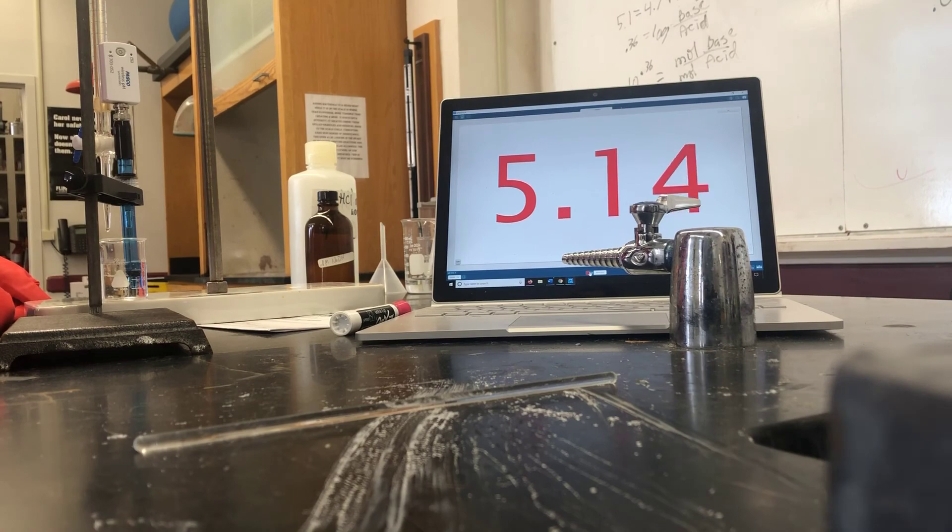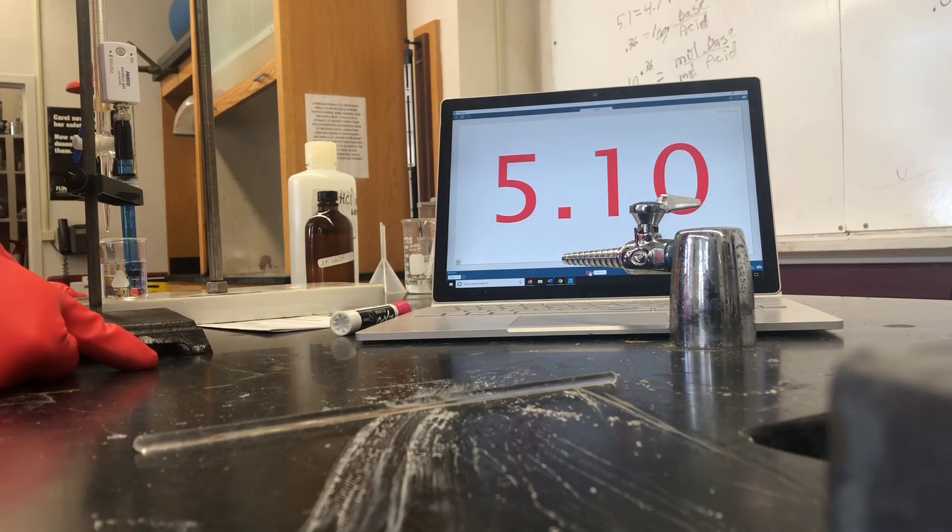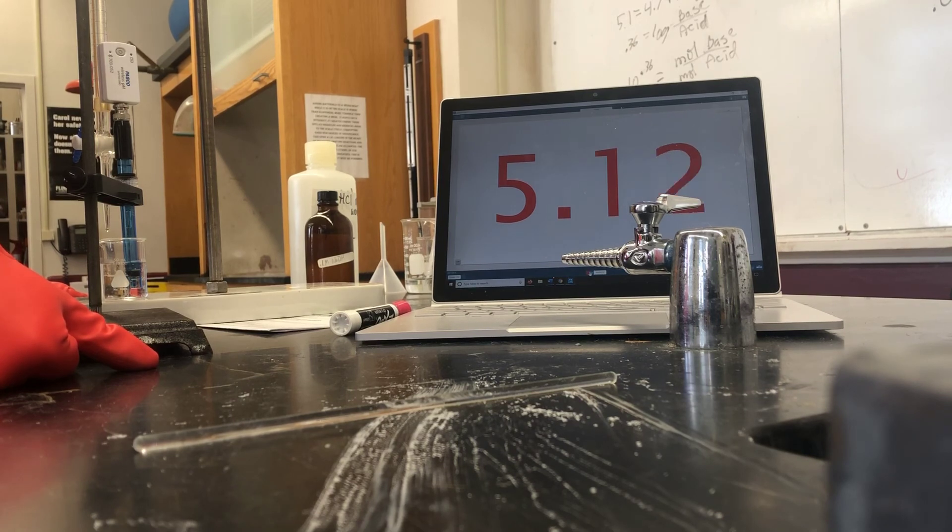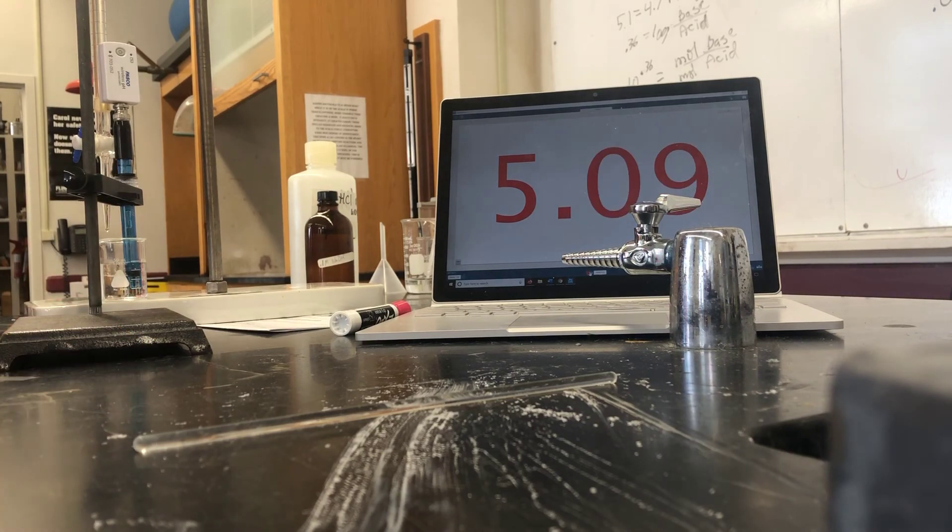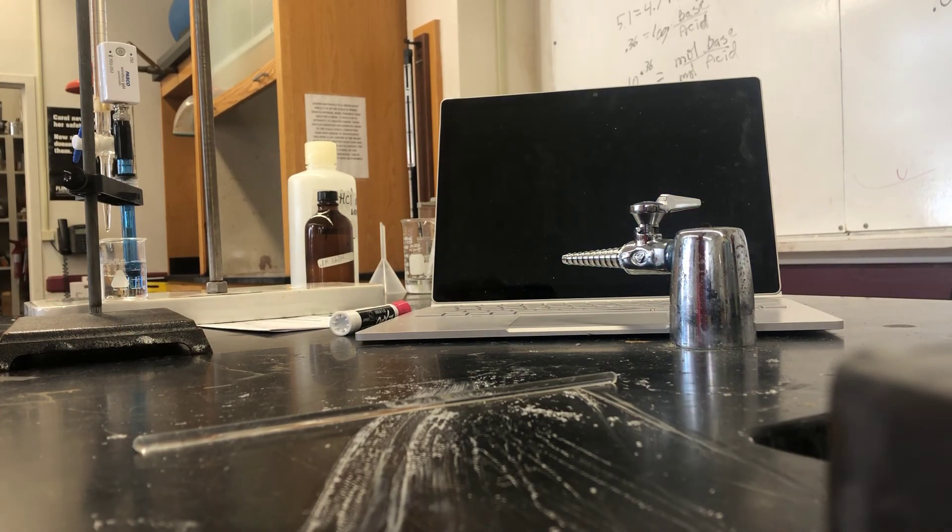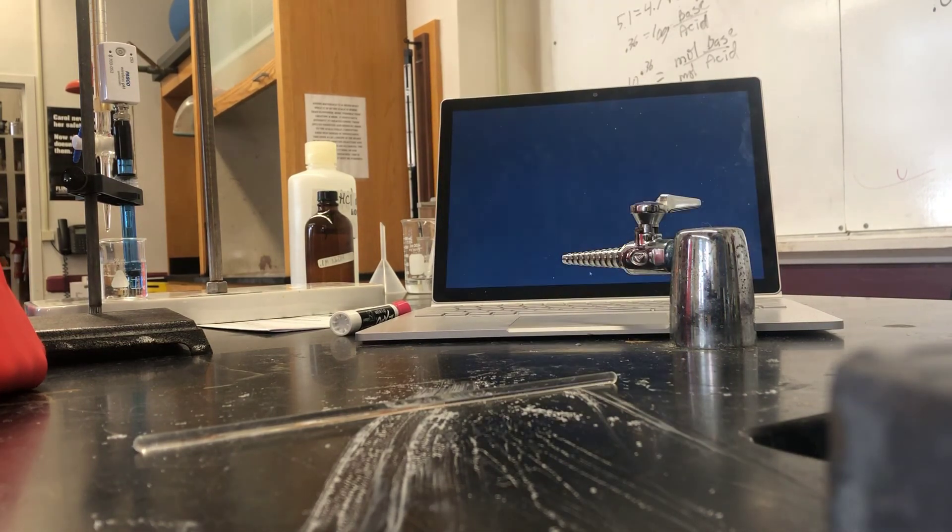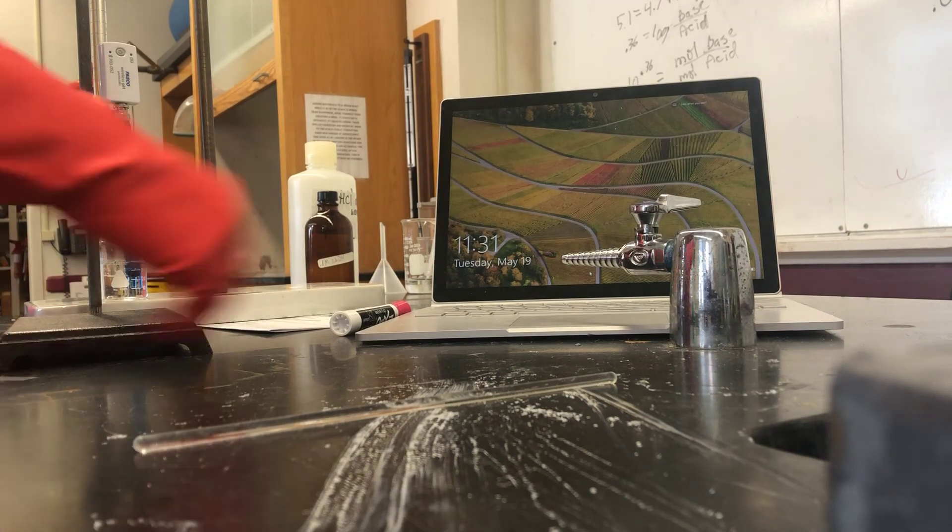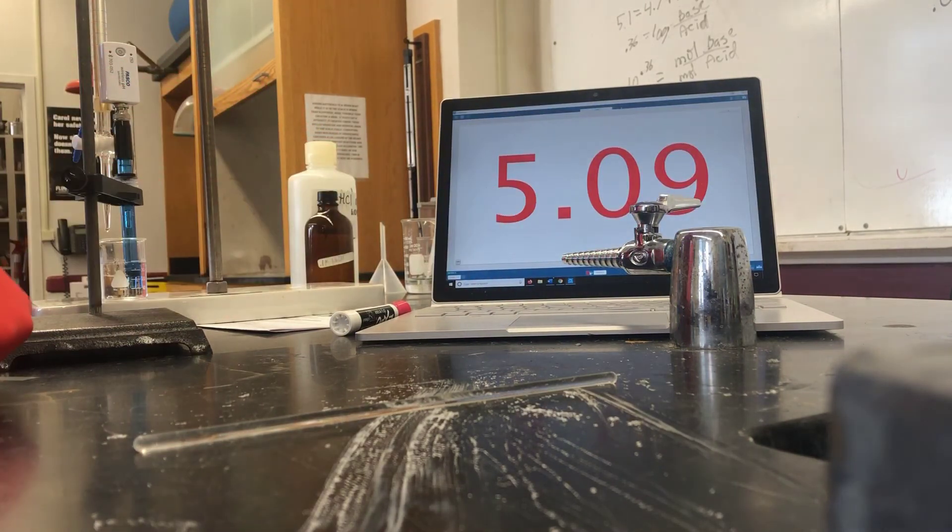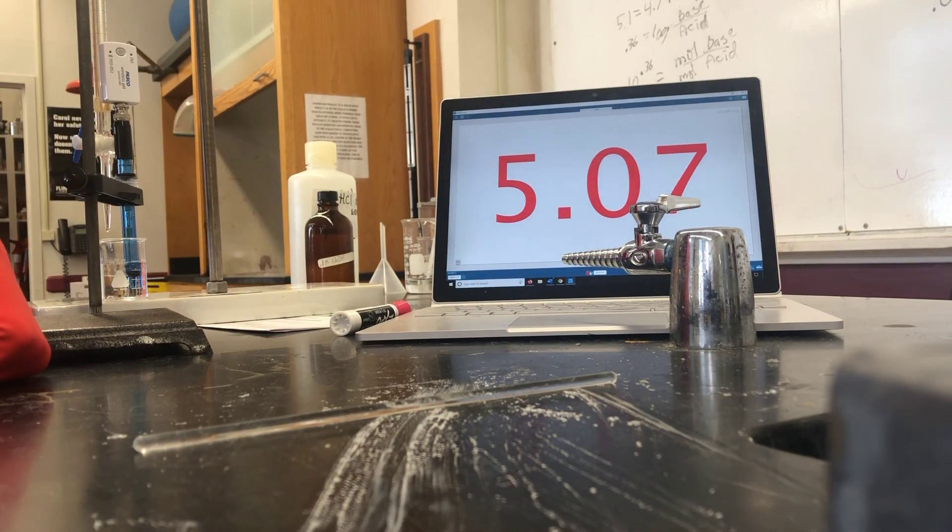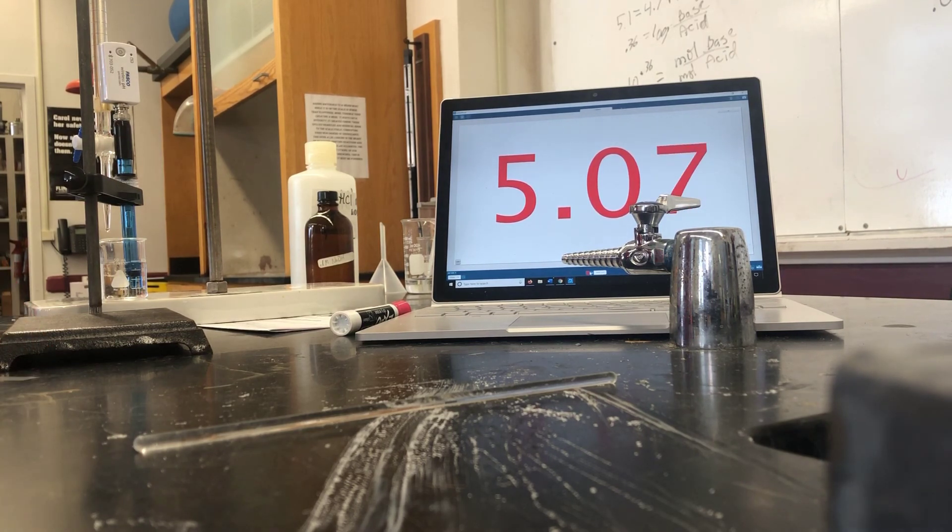Our volume when we hit 5.1 on our pH is about 10.8 milliliters. Now our predicted volume for our sodium hydroxide was 17 milliliters. But as you can see, it only took 10.8, so clearly, all in all that's pretty good.